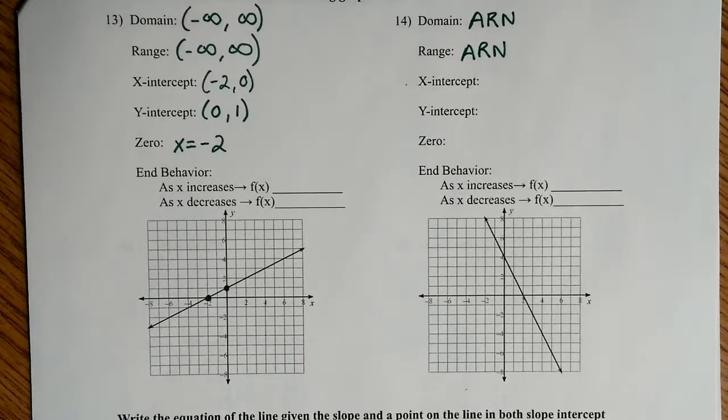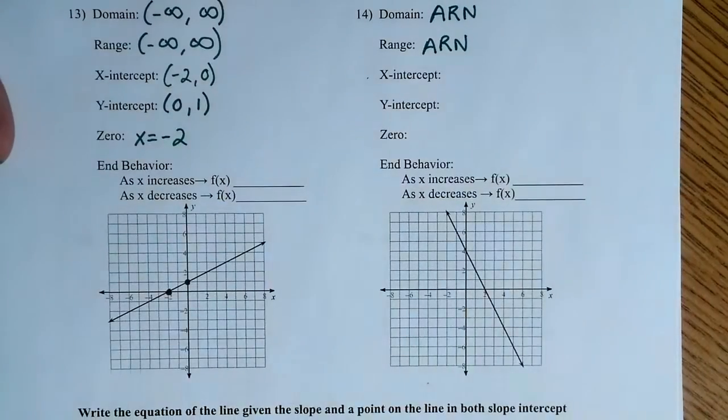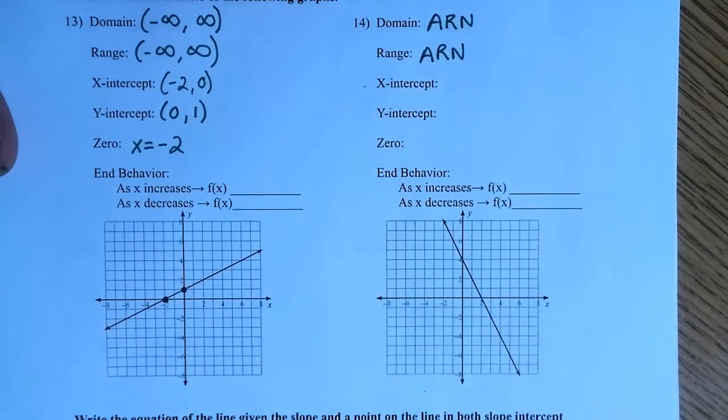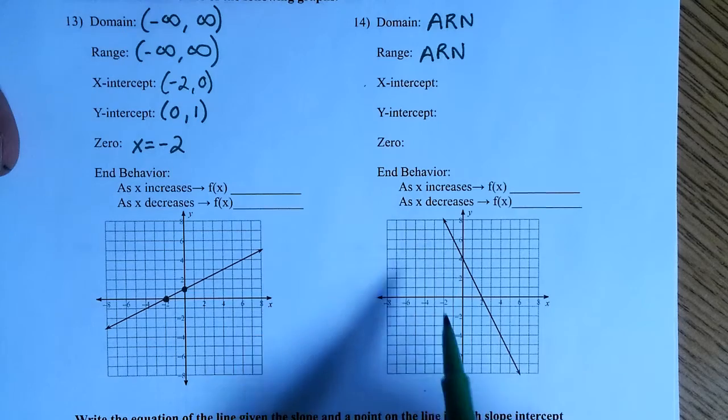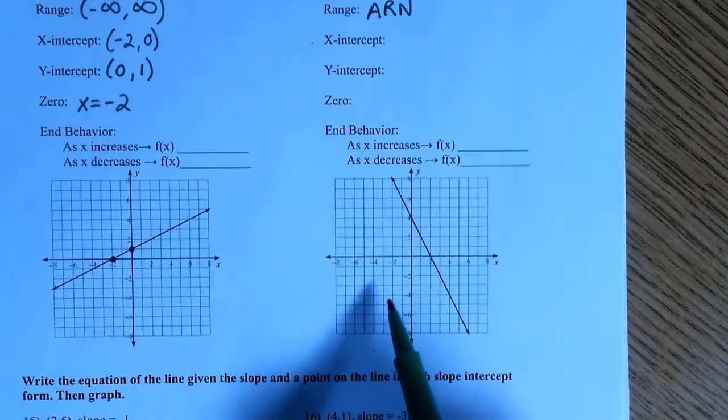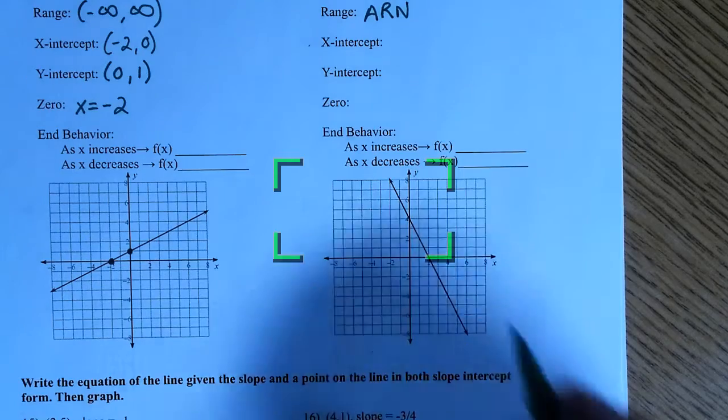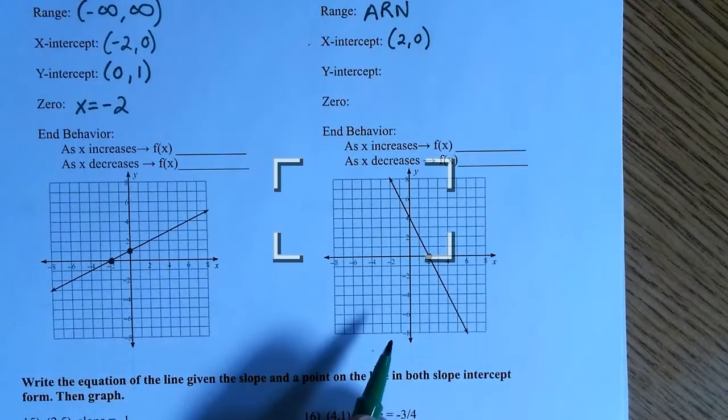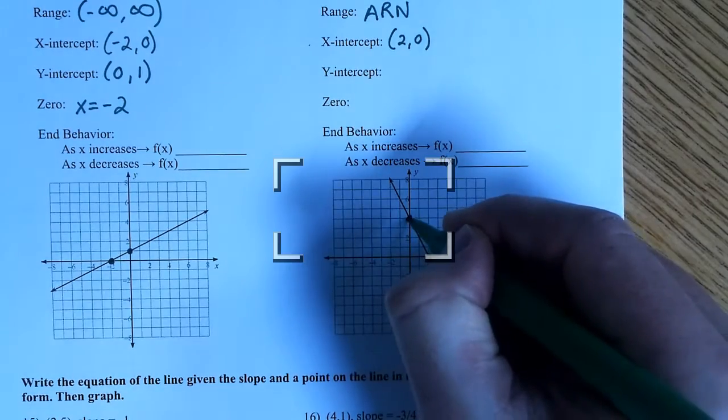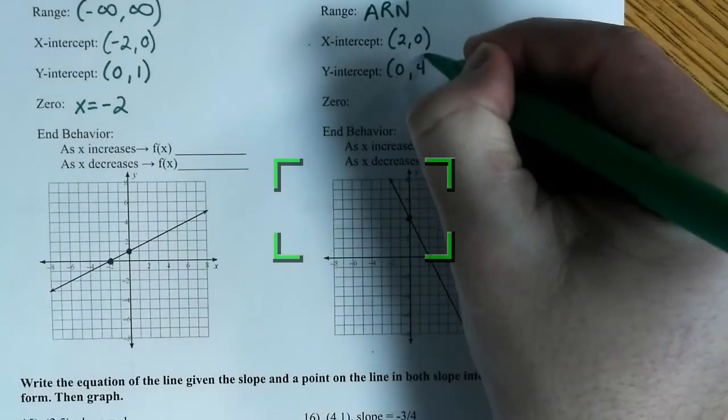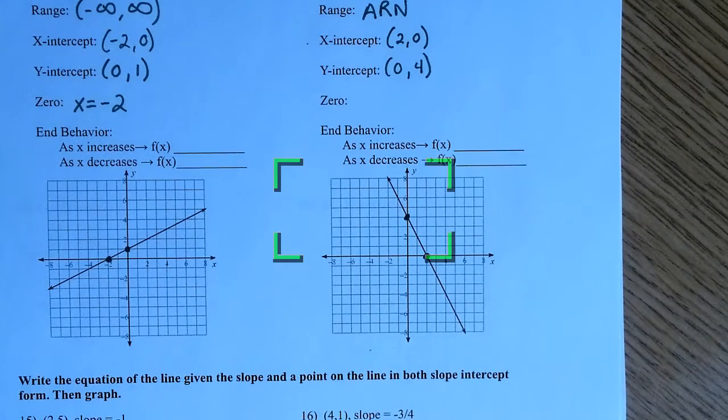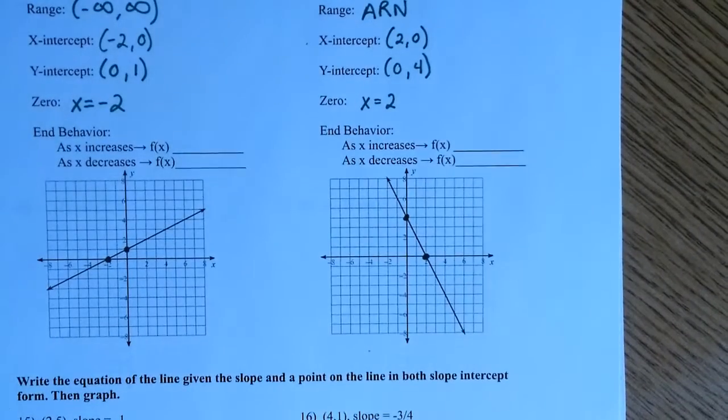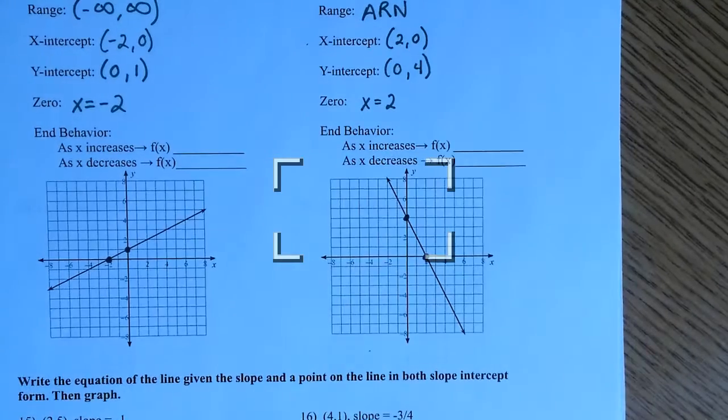Let's go ahead and do that one. The same idea for 14. And then we'll do end behavior for each of these. So, what is your x-intercept for 14? Yeah, is 2, 0. What is my y-intercept? It's going to be 0, 4. What is my zero? Would be 2. Yeah, x equals 2. That's my zero. When you talk about zeros, zeros are always written as x equals.